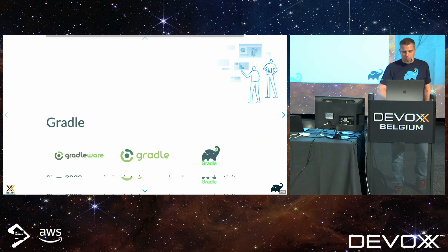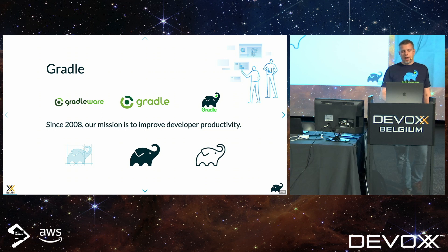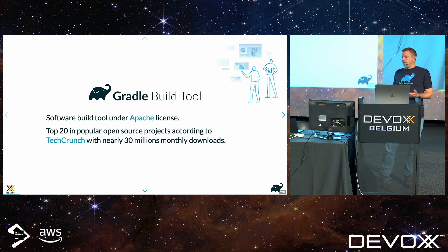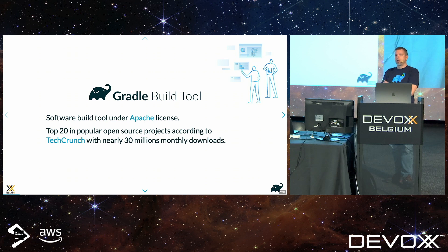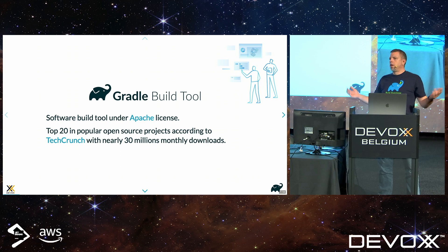A bit about Gradle: it's a nice build tool, but it's also a company that allows us to be here to talk to you today. Gradle itself, since 2008, the goal is to improve developer productivity — make developers more productive by having a tool that tries to get out of the way. The build tool is effectively an Apache-licensed project. A couple of years back it was mentioned as one of the top 20 popular open source projects, and nowadays we reach around 30 million downloads monthly. These numbers have to be taken with a grain of salt because ephemeral CI has made it widespread. If you use the Gradle wrapper, you get downloads every CI run.